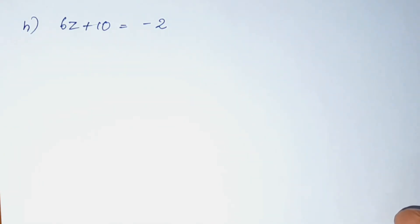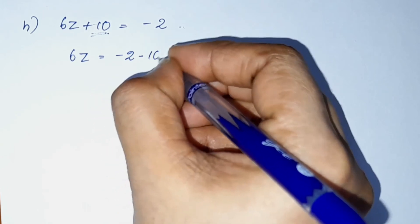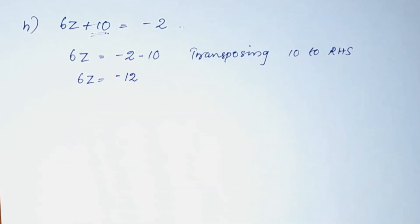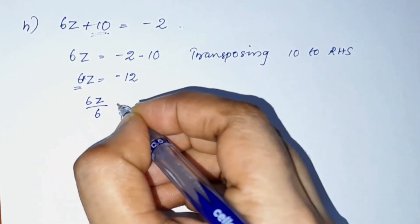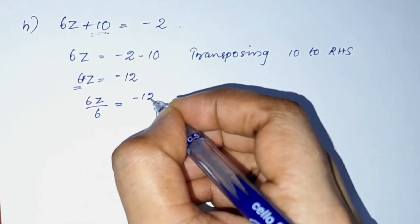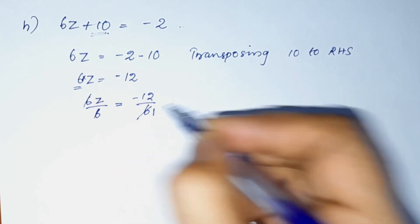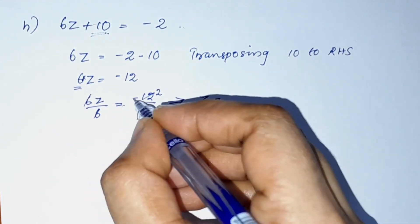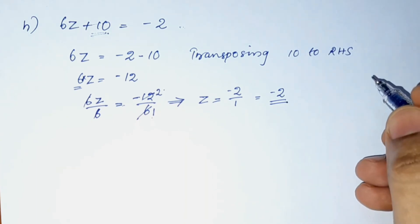Next question: 6z plus 10 is equal to negative 2. Transposing 10 to the right-hand side, 6z is equal to negative 2 minus 10, which is negative 12. Now dividing both sides by 6, 6 and 12 cancel since 6 times 2 is 12. So z is equal to negative 2. Z is equal to negative 2.